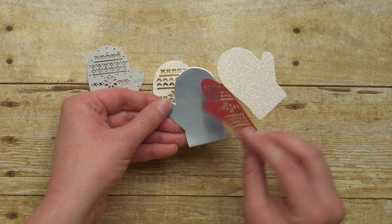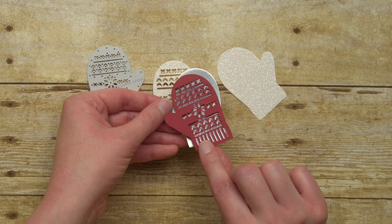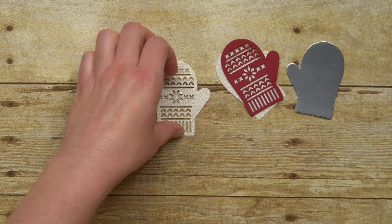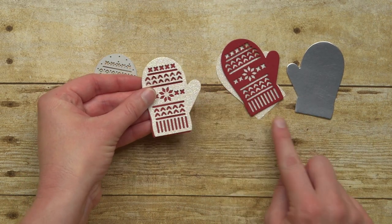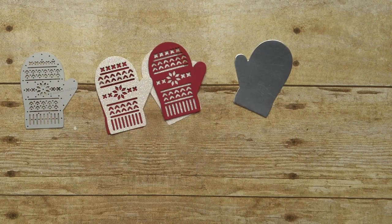When you cut this mitten out you can just flip it over to get your right and your left. It looks great with the glimmer paper on top or the glimmer paper underneath or any of our specialty papers.